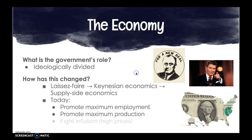Today our government has three goals with the economy: promote maximum employment, promote maximum production, and fight inflation — those high prices. In 2019, our government spent 4.45 trillion dollars. We are 23.16 trillion dollars in debt and operate at a 984 billion dollar deficit, which is the amount we overspent in a year. The economy in our country is huge.